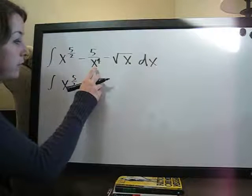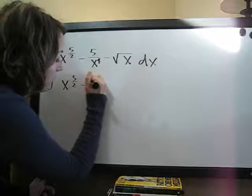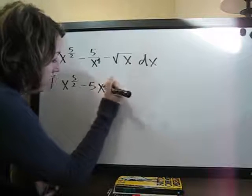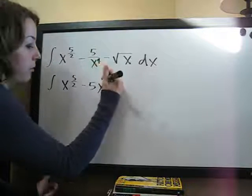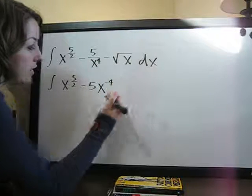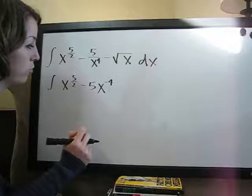We're going to eliminate this fraction by moving the x to the 4th to the top. The way that we do that is change the sign on the exponent from a positive to a negative. 5x to the negative 4 is the same as 5 over x to the 4th.